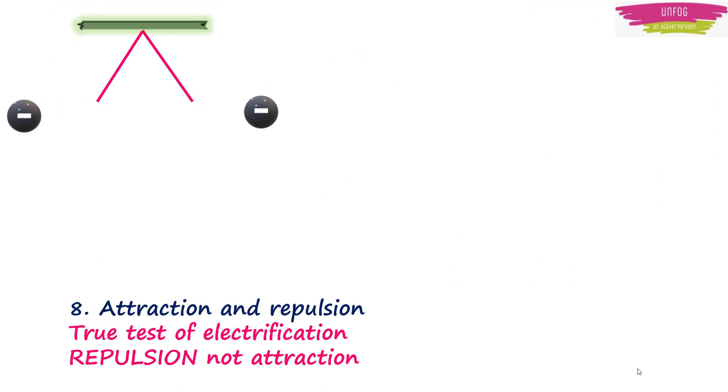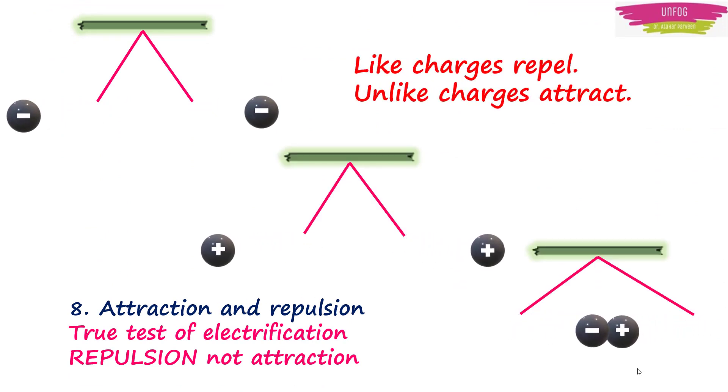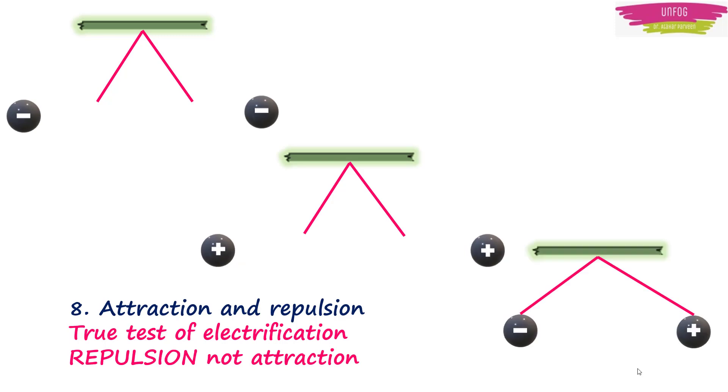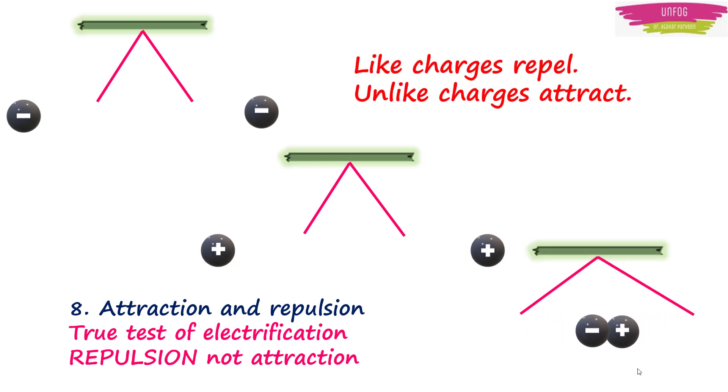Charged objects exhibit repulsion and attraction property. Note that the true test of electrification is repulsion and not attraction. Attraction may also take place between a charged and an uncharged body, and also between two bodies with unlike charges.